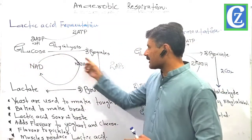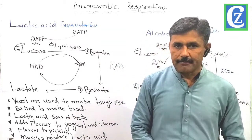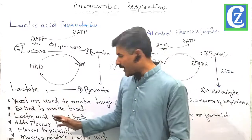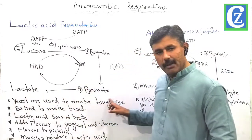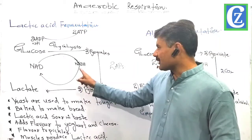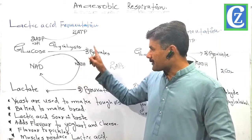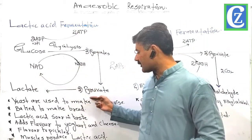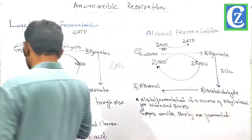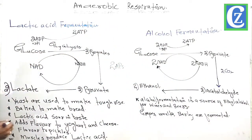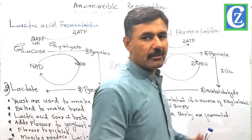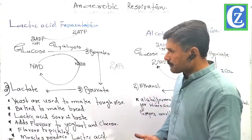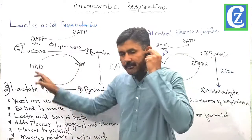Now there is a probability whether these pyruvates will break aerobically or anaerobically. This breaks anaerobically into lactic acid or lactate. What actually happens — these two molecules of pyruvates are reduced. Two molecules of NADH that are synthesized during glycolysis are consumed. NADH oxidizes and it reduces pyruvates into two molecules of lactate. This is simply the reduction of pyruvates into lactic acid, which is called lactic acid fermentation, and this process consumes two molecules of NADH.